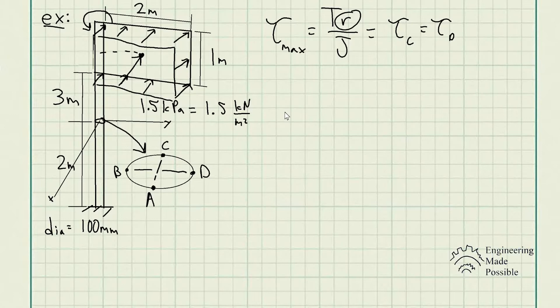We have a post and some sort of sign here that is experiencing some wind. And so we have 1.5 kilopascals of pressure uniformly distributed across the sign itself, which is equivalent to 1.5 kilonewtons per meter squared. The resultant force is right at the centroid of the post, depending on the geometry. In this case it's rectangular, so we know the center quite easily.